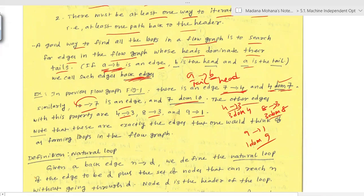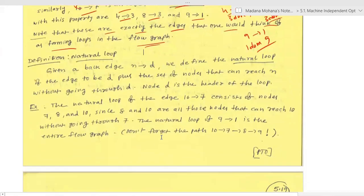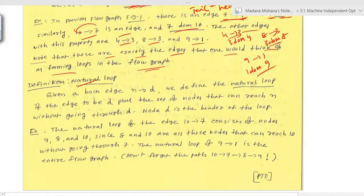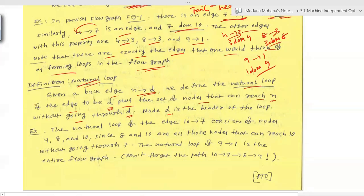These are exactly the edges one would think of as forming loops in the flow graph. The definition of a natural loop: given a back edge n→d, the natural loop of the edge is d plus the set of nodes that can reach n without going through d. Node d is the header of the loop.